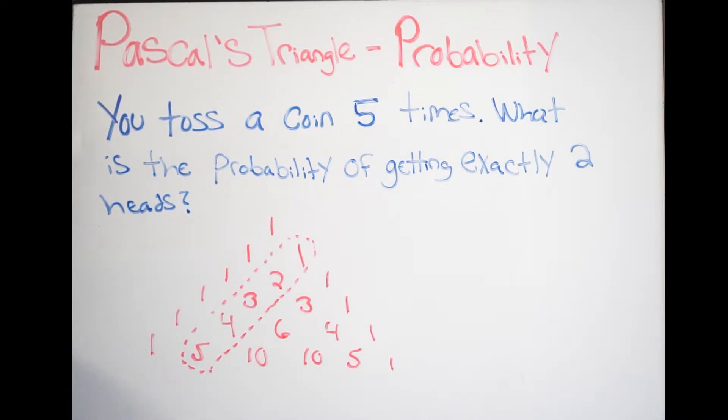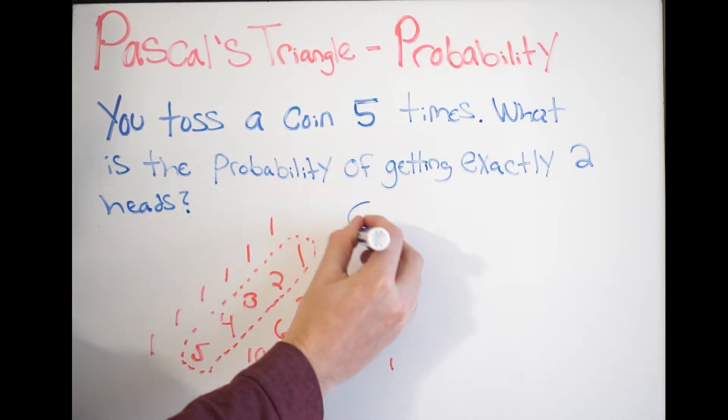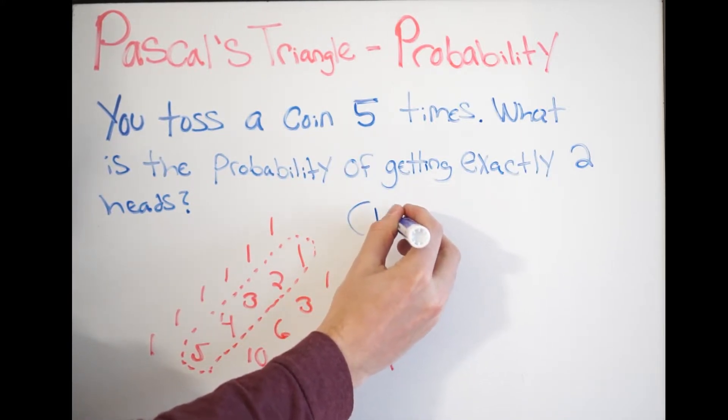So, think about how we can write this. I can either have heads or tails. So, I could technically write this as a binomial, hence why I can use Pascal's triangle for this problem. So, for example, I can write it the following way.